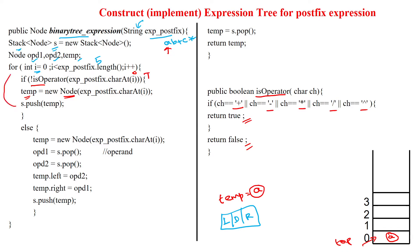Then again we are incrementing i. i equals 1. Reading the next character 'b'. So 'b' is not an operator. For 'b', we are creating the node and assigning it to the temporary node. Then that temporary node is pushed into the stack. So 'b' is pushed into the stack.